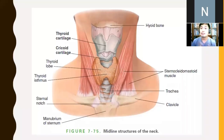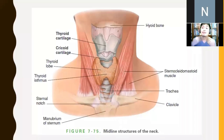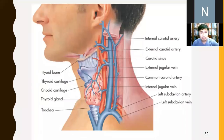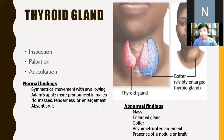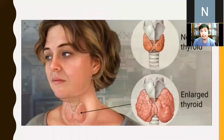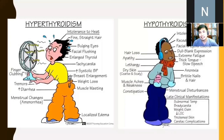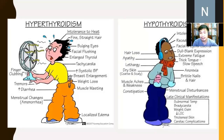Students commonly mistake the thyroid cartilage for the thyroid gland during palpation. Look for the cricoid cartilage — the thyroid gland is below the cricoid, between the sternocleidomastoid muscles. Goiter is an enlargement of the thyroid gland. Study how to differentiate hyperthyroidism from hypothyroidism: heat intolerance in hyperthyroidism versus cold intolerance in hypothyroidism; fine hair in hyperthyroidism versus coarse hair in hypothyroidism. Hoarseness of voice lasting more than two weeks, tobacco use, hemoptysis, weight loss, and unilateral throat pain are concerning symptoms.